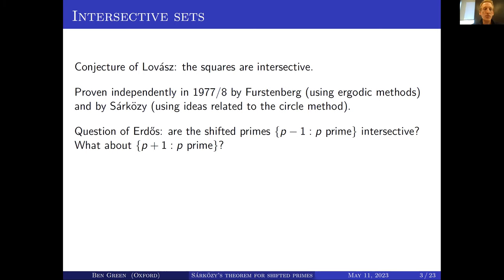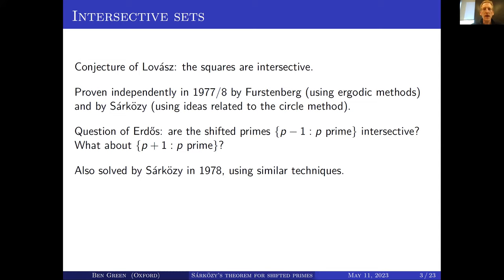He also asked about the primes shifted the other way, p plus 1. That was resolved by Sárközy as well, again in the late 70s, using somewhat similar techniques to the way he dealt with the Lovász conjecture — using methods related to the circle method of Hardy and Littlewood.